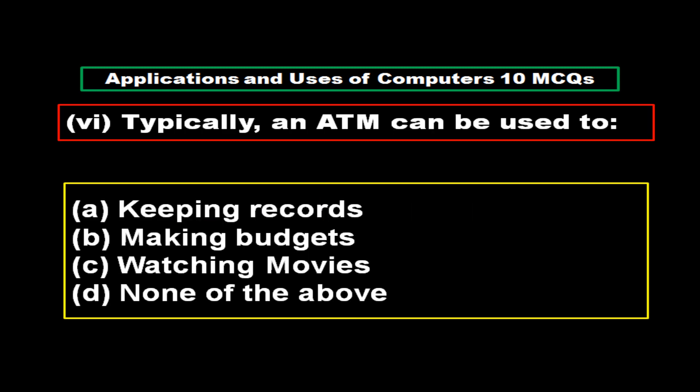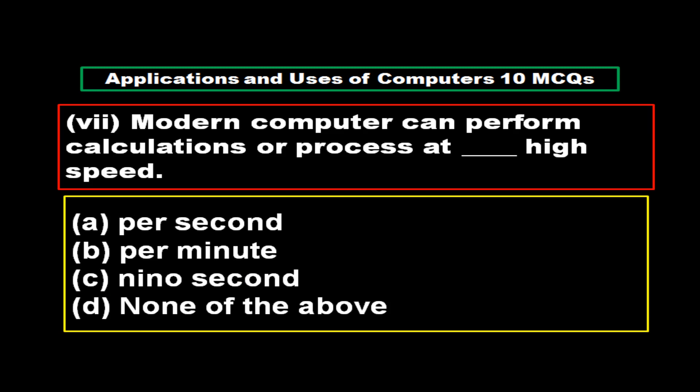An ATM can be used to: Option A Keeping Records, Option B Making Budgets, Option C Watching Movies, Option D None of the above. And the right answer is Option D: None of the above.